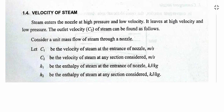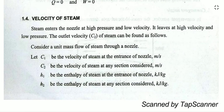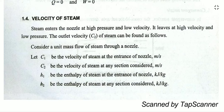Let us derive a relationship for the velocity of steam in the nozzle. We consider unit mass flow rate — m equals one kilogram per second. C1 and C2 are the velocities at the inlet and exit of the steam, and H1 and H2 are the specific enthalpies at the inlet and outlet, in kilojoules per kilogram.